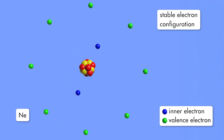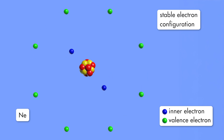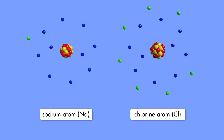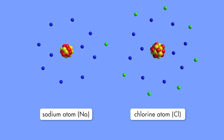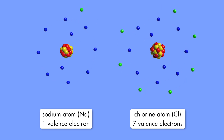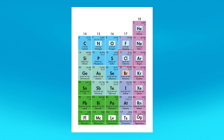Atoms with their outermost sublevel filled with valence electrons are the most stable atoms. This neon atom has two inner electrons and eight valence electrons, which is a stable electron configuration. A sodium atom has one valence electron, while a chlorine atom has seven valence electrons. Sodium is an alkali metal from group one of the periodic table. Chlorine is a halogen, a non-metal located in group 17 of the periodic table.